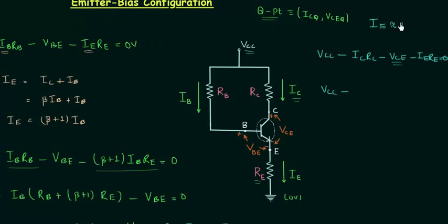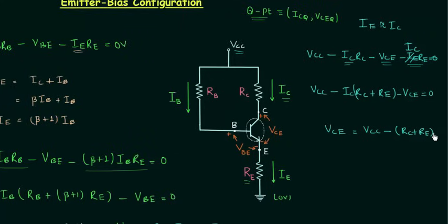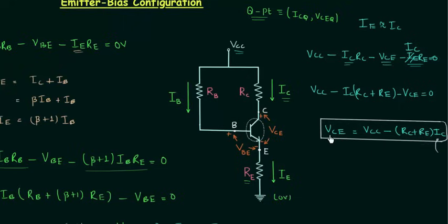The emitter current IE is nearly equal to the collector current IC, so we can replace IE with IC. Taking IC common from those two terms gives us IC·(RC + RE). Therefore VCE equals VCC minus IC·(RC + RE). Using the previously derived expression for IC, we substitute to calculate VCE.